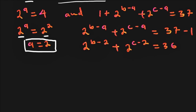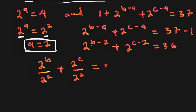We can simplify this equation using the third law of indices. If the base is the same and we have a difference in the power, it was the first one over the second one. So we write this as 2 power b over 2 power 2, plus 2 power c over 2 power 2, equal to 36. Since the denominators are the same — 2 power 2 and 2 power 2 — we can combine them into a common fraction.